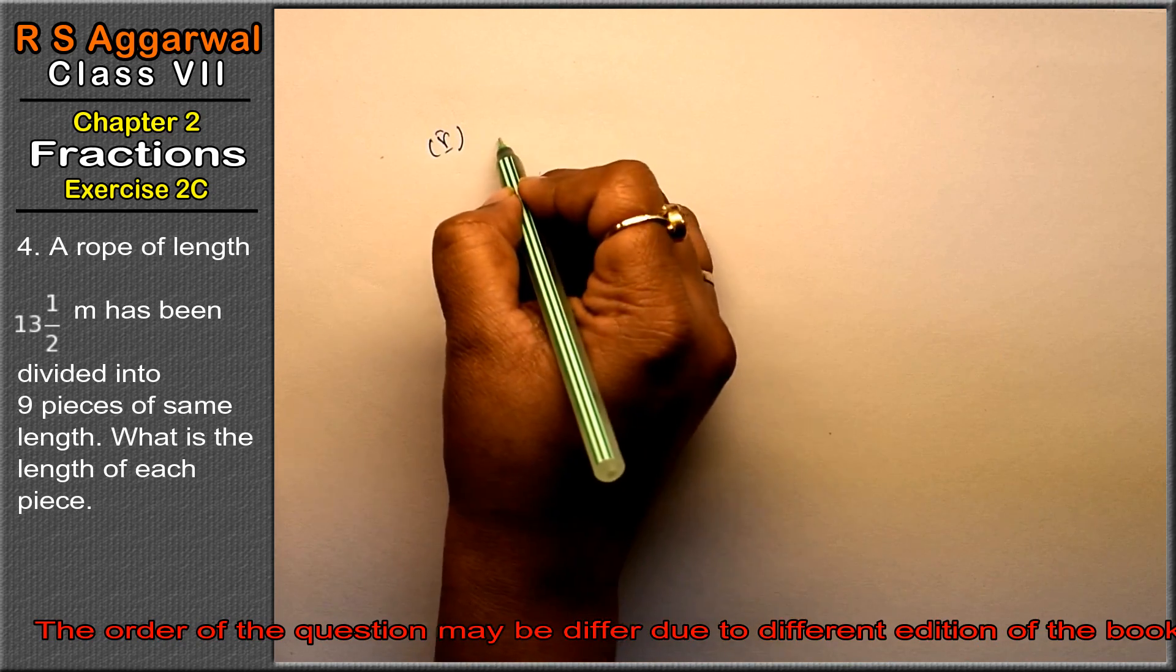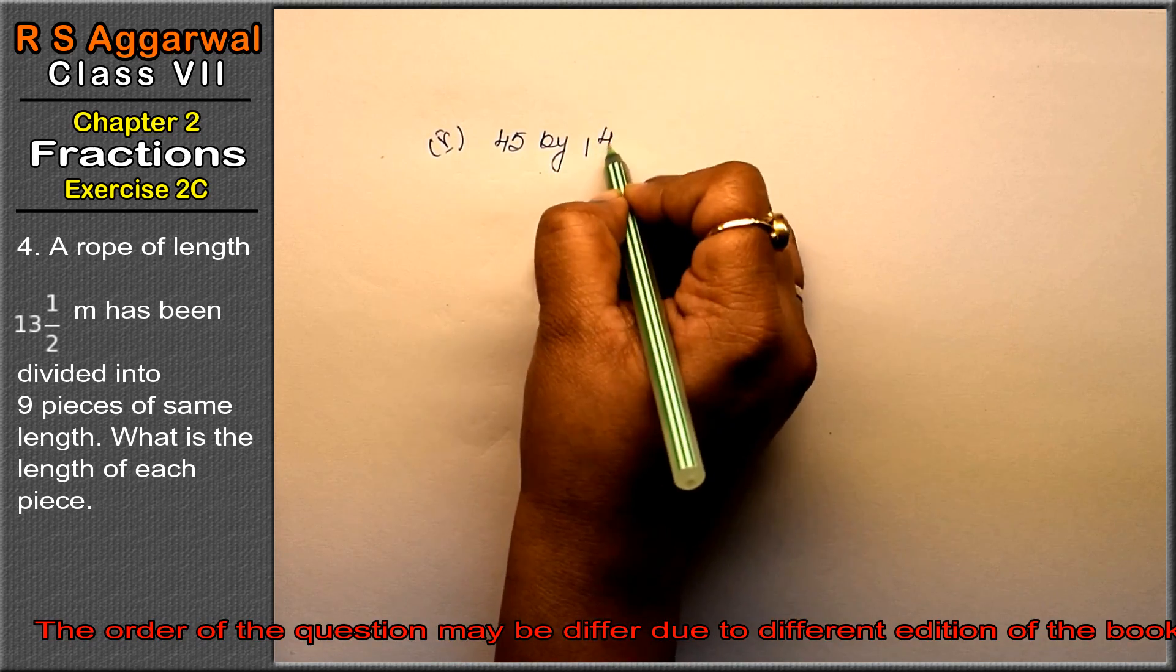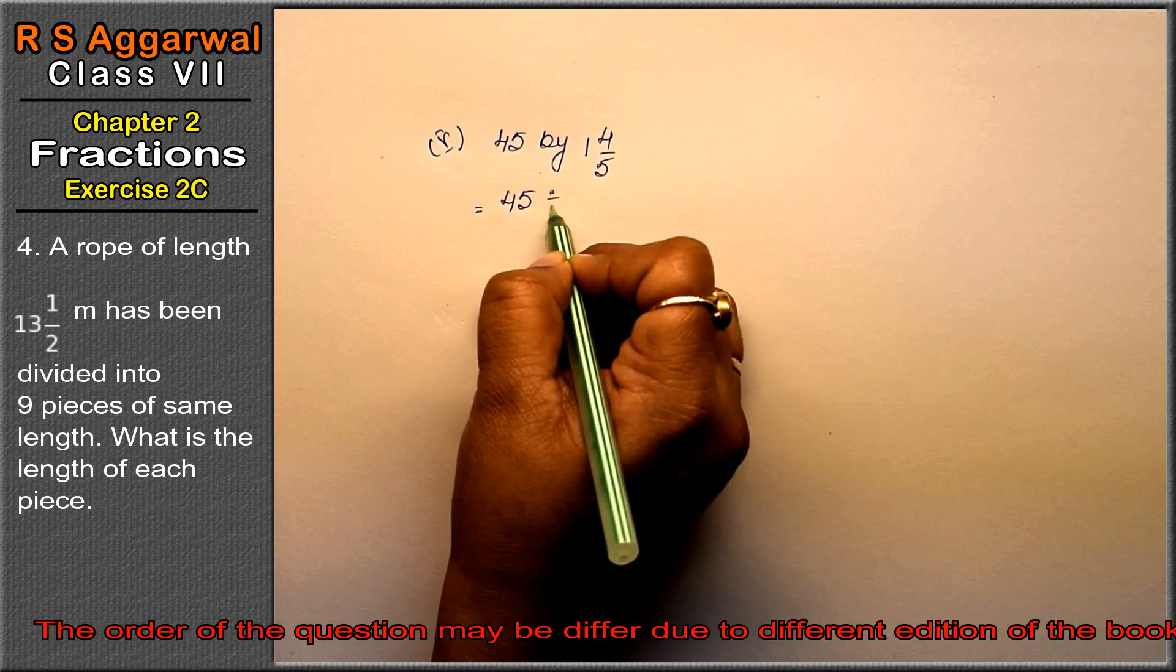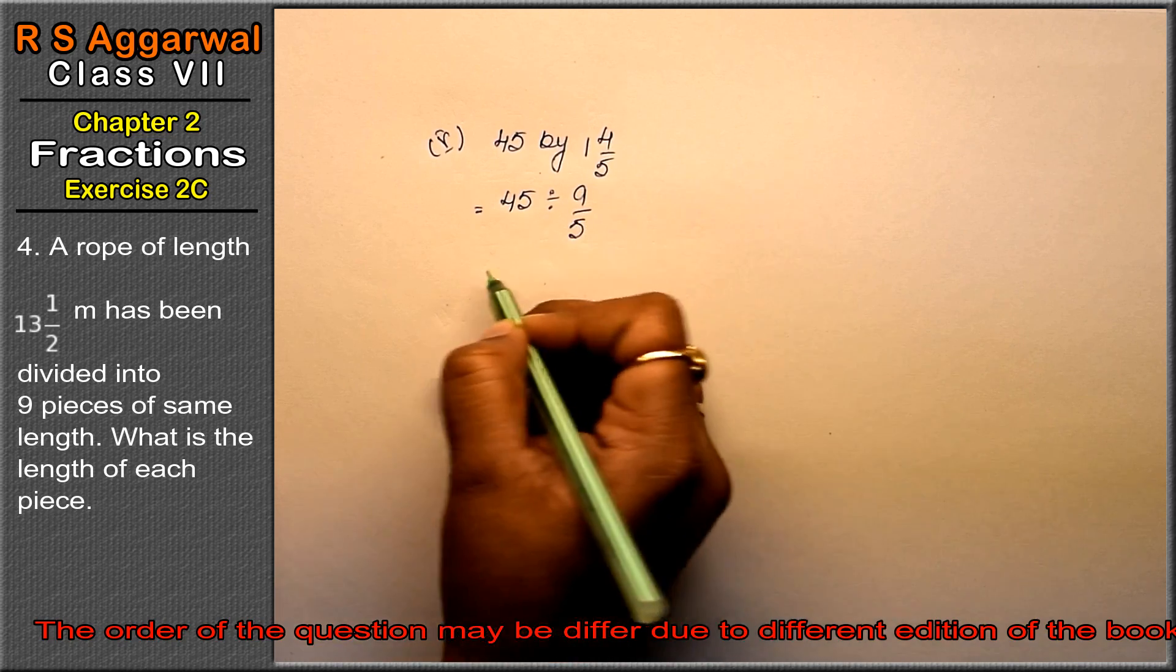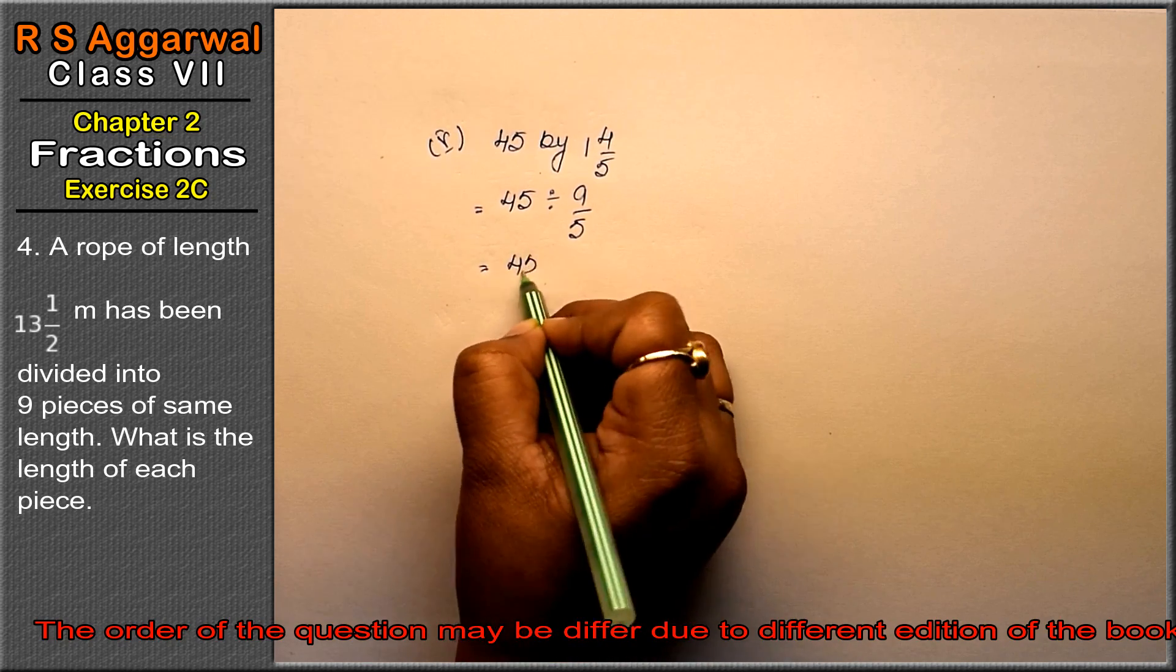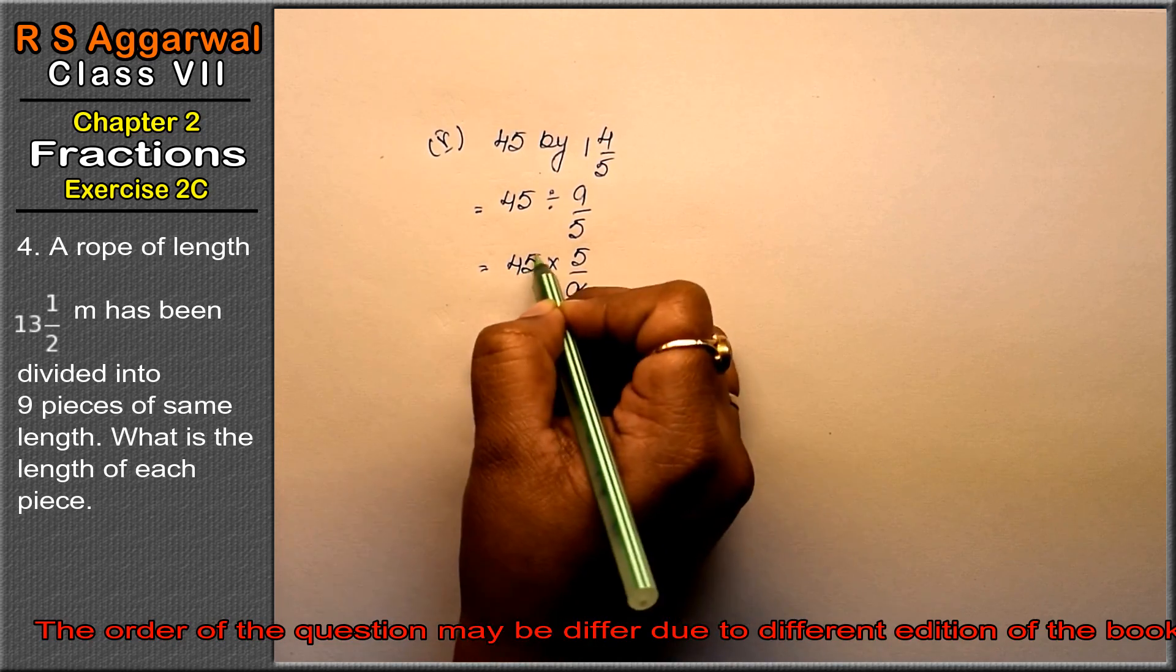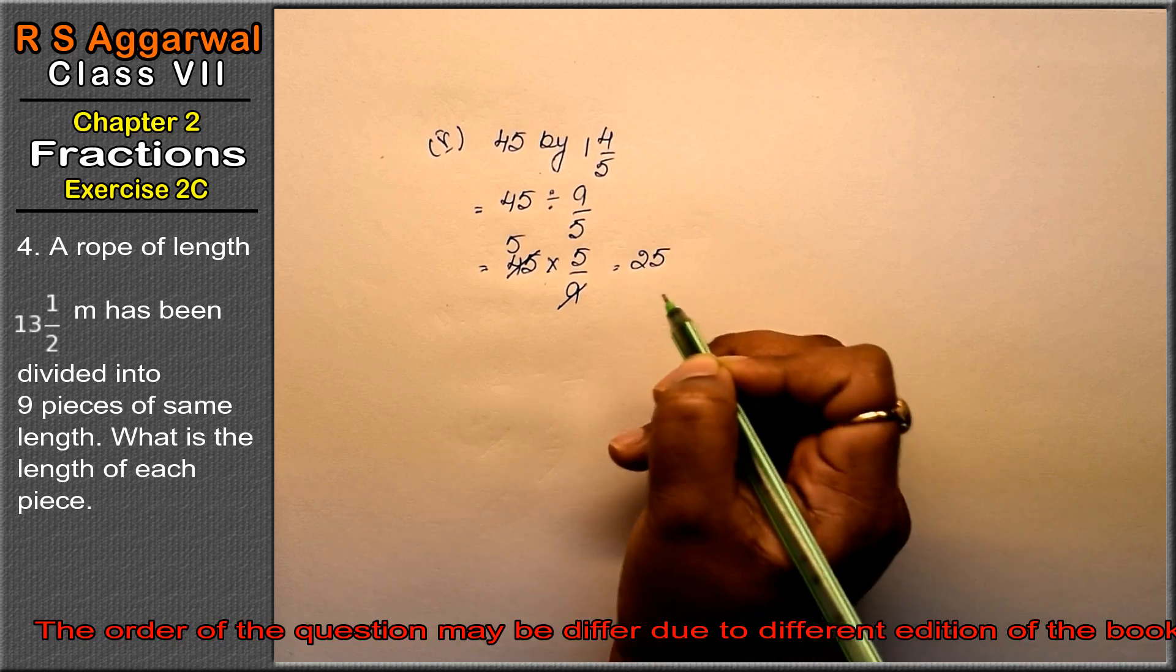Fourth part is divide 45 by 1 whole 4/5. So here is 45 divided by 1 whole 4/5. 5 times 1 is 5 plus 4 is 9/5. So 45 divided by 9. 9 times 5 is 45. That means 25 is the answer.